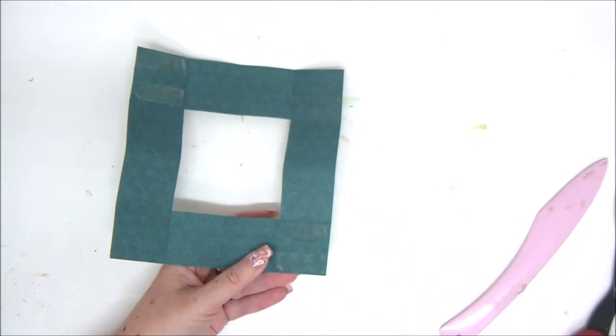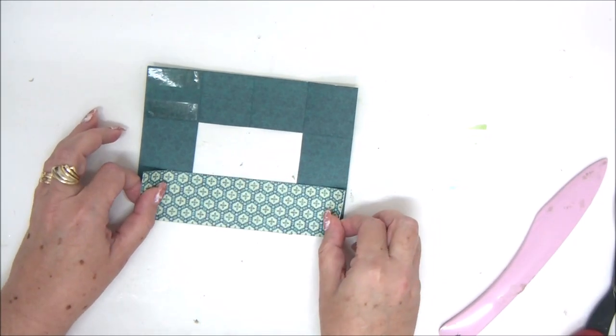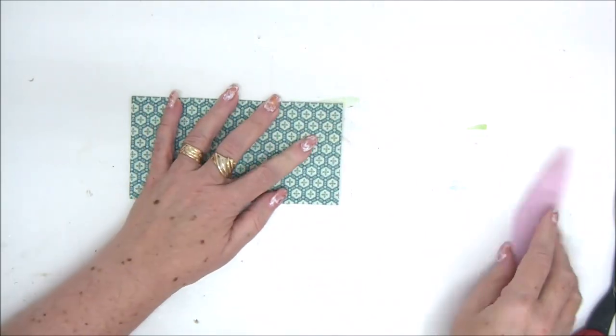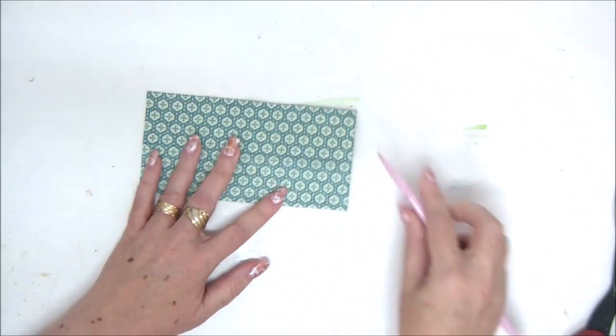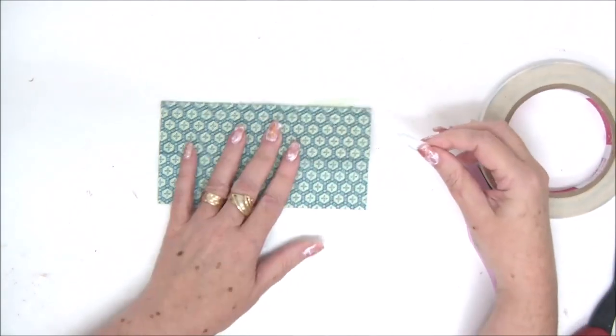And then we're going to take our paper and fold the edge towards the center and the other edge towards the center like this. This is the first step. Just burnish well, make sure that the paper is glued properly.